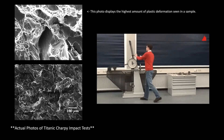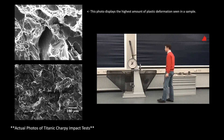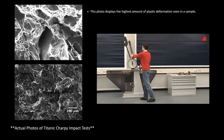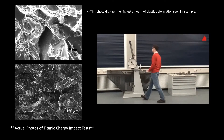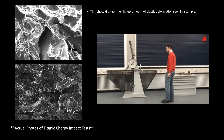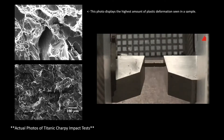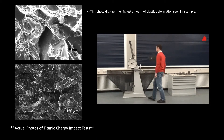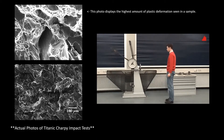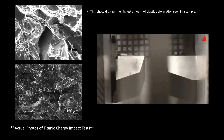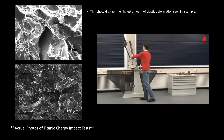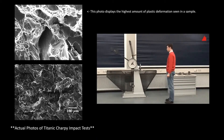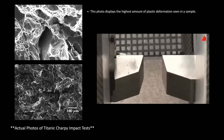After scientists recovered the first piece of steel from the hull from the wreckage in 1991, Charpy impact tests revealed that the steel fractured in a 100% brittle failure at the same icy temperatures in which the Titanic sank.